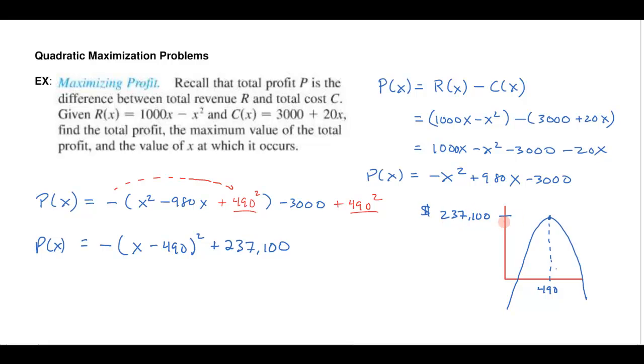which is this 237,100 dollars, but I also get that it occurs where x is 490. So from that information we could say the maximum profit is 237,100 dollars, where x equals 490. So there's my answer.